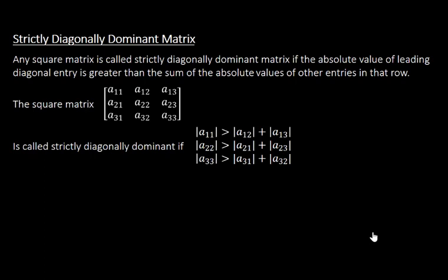The first row entries are a11, a12, a13. The second row entries are a21, a22, a23. The third row entries are a31, a32, a33. The leading diagonal entries of this matrix are a11, a22, a33. This matrix is called strictly diagonally dominant if the absolute value of the leading diagonal entry of the first row is greater than the sum of the absolute values of the other two entries, a12 and a13.